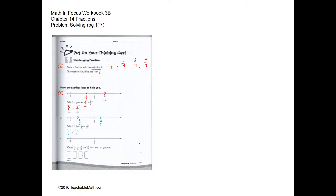Now we are going to order these fractions from least to greatest: one seventh, three fifths, three eighths, and eight ninths. We can do this by sight — one seventh will be the least and eight ninths will be the greatest.